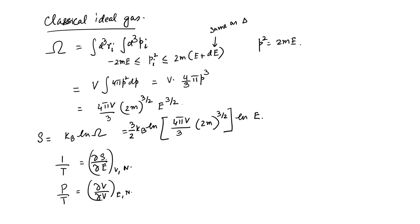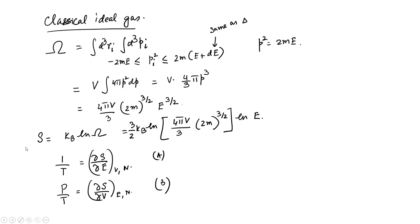Taking the derivative of entropy with respect to energy gives 1/T, and taking the derivative with respect to volume recovers the equation of state PV = NkT. You can see the volume appears inside the log, making that derivative straightforward. This simple problem shows how to extract thermodynamic parameters such as temperature and pressure from the number of microstates.